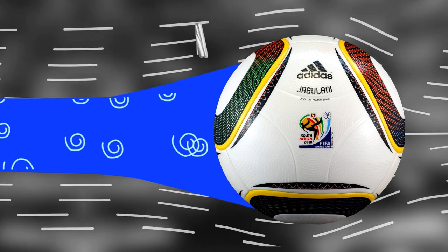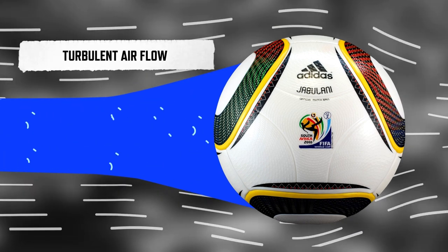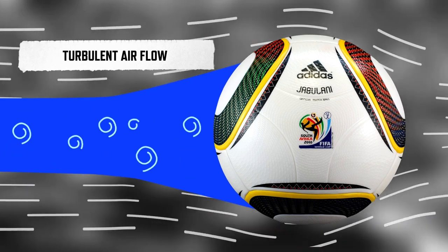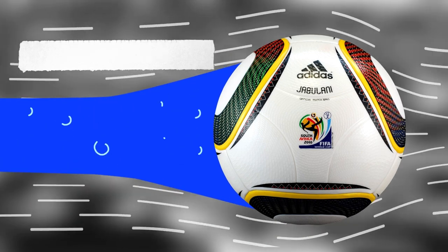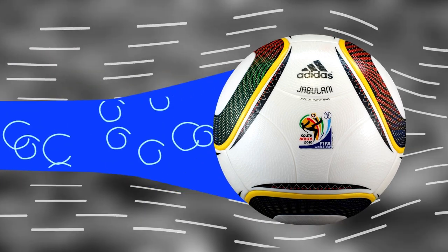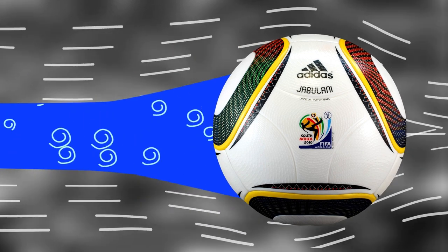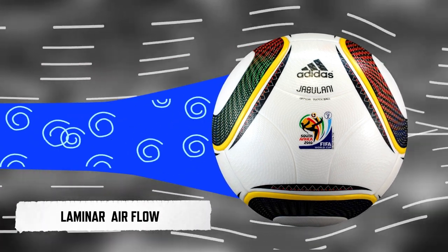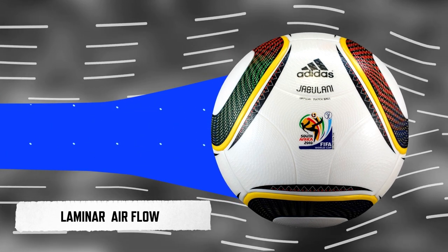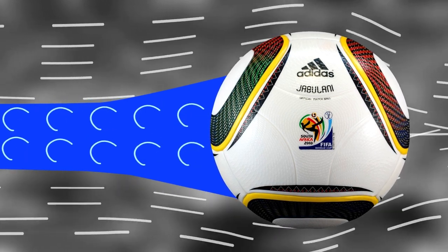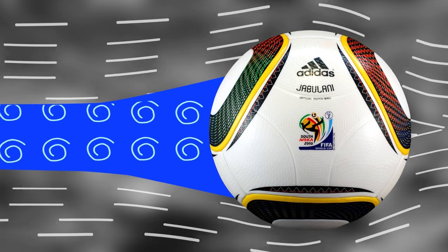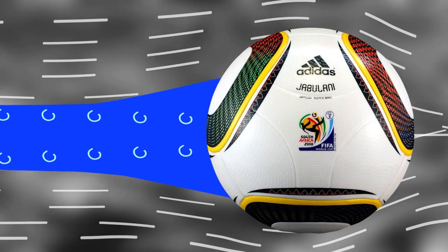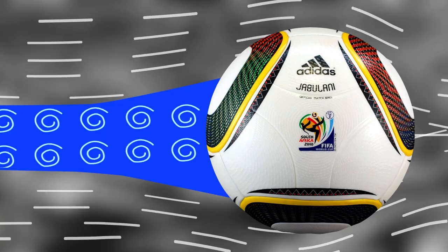At high speeds, this airflow is called turbulent airflow, where air separates very far off the back of the ball, leaving a wake of air behind the ball that looks rather chaotic. But as the ball speed slows, the airflow transitions into what we call laminar flow, where air separating off the back of the ball looks a lot smoother and less chaotic. Importantly, the drag force is larger for laminar flow than for turbulent flow.